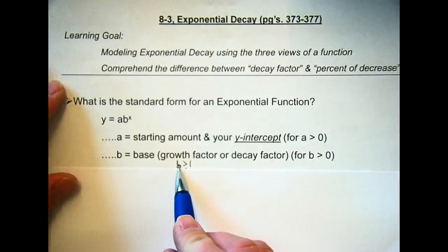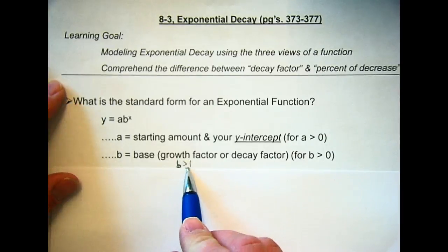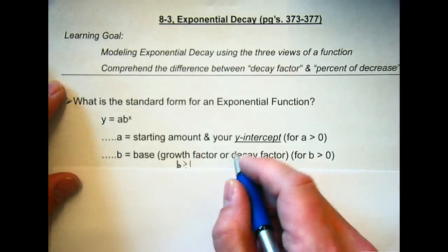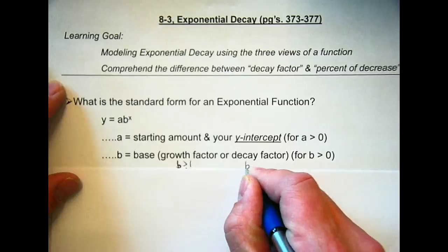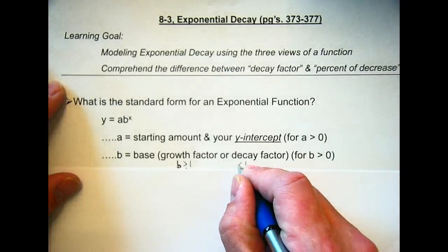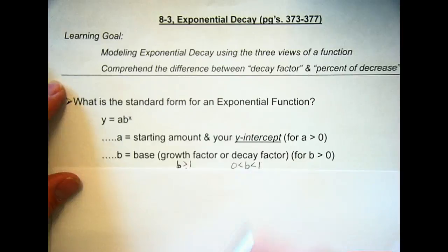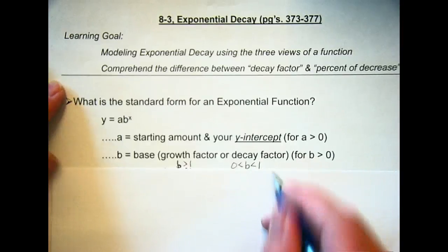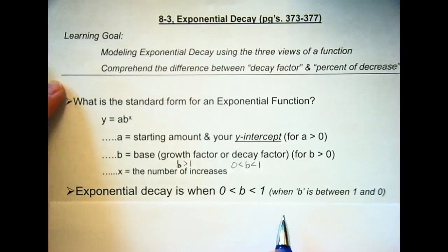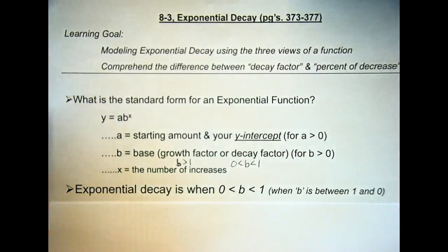Okay? So, if growth is when it's greater than 1, decay has to be, yeah? When it's greater than 0? Yeah, it has to be greater than 0. So, when B is greater than 0, okay? And when B is less than 1. So, it's in between. Another way of thinking of that is when B is between 1 and 0. Okay? When B is between 1 and 0, it's exponential decay.